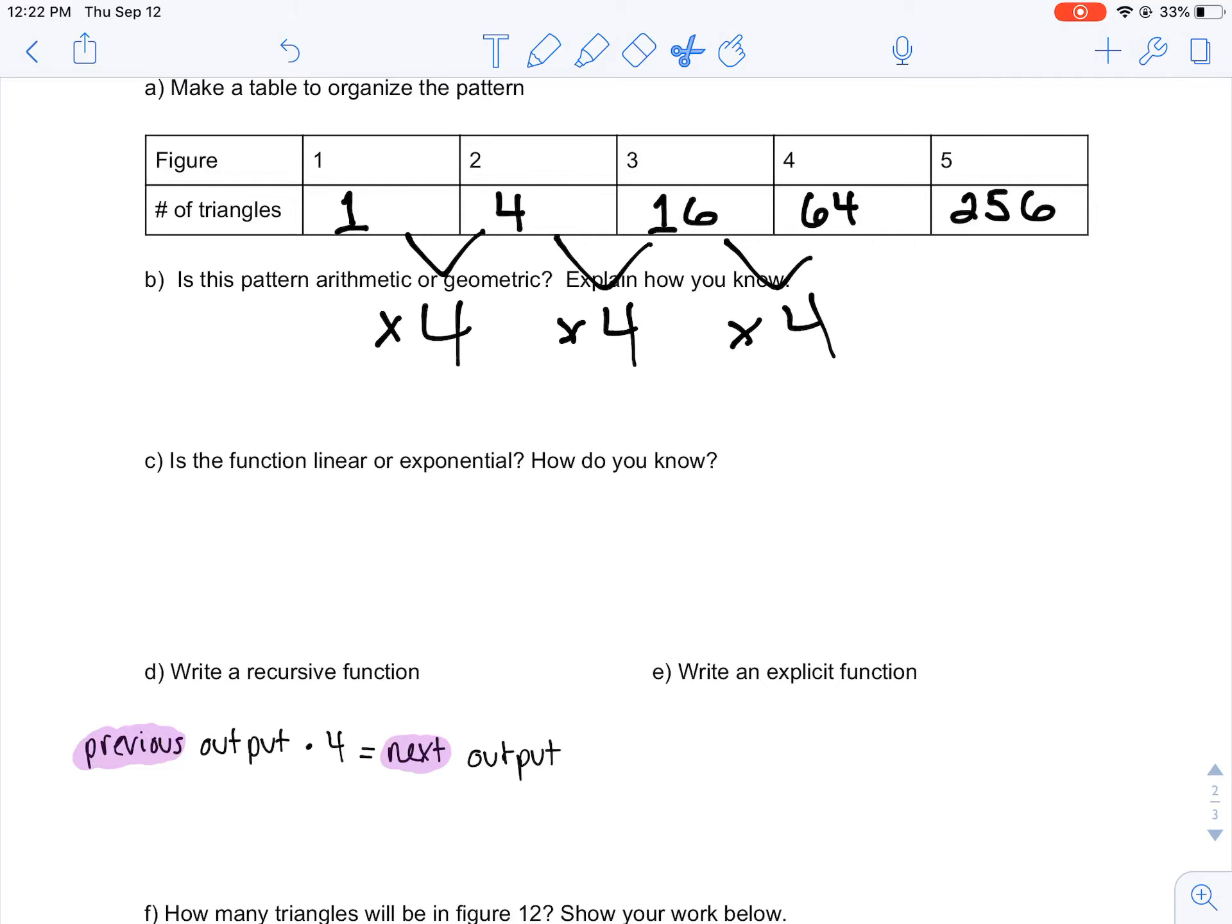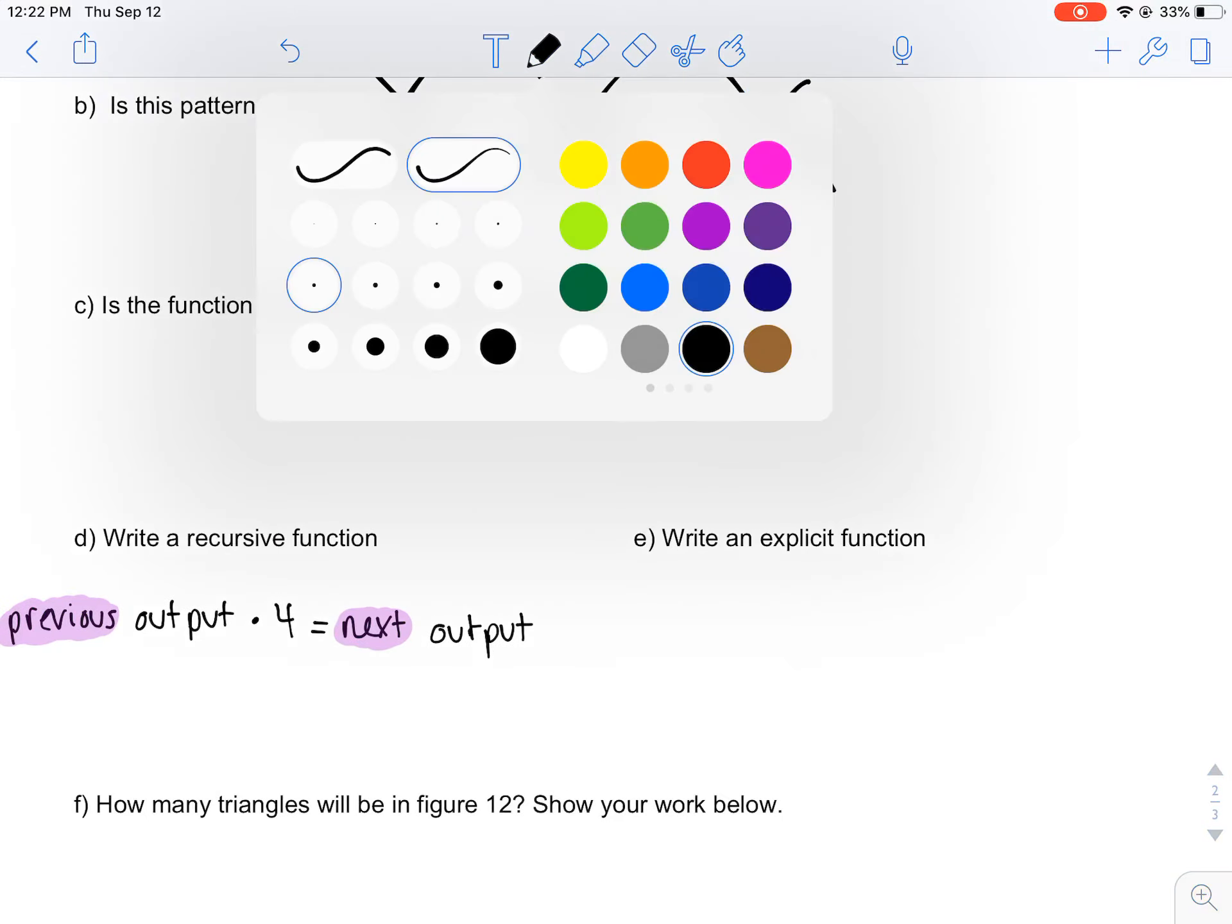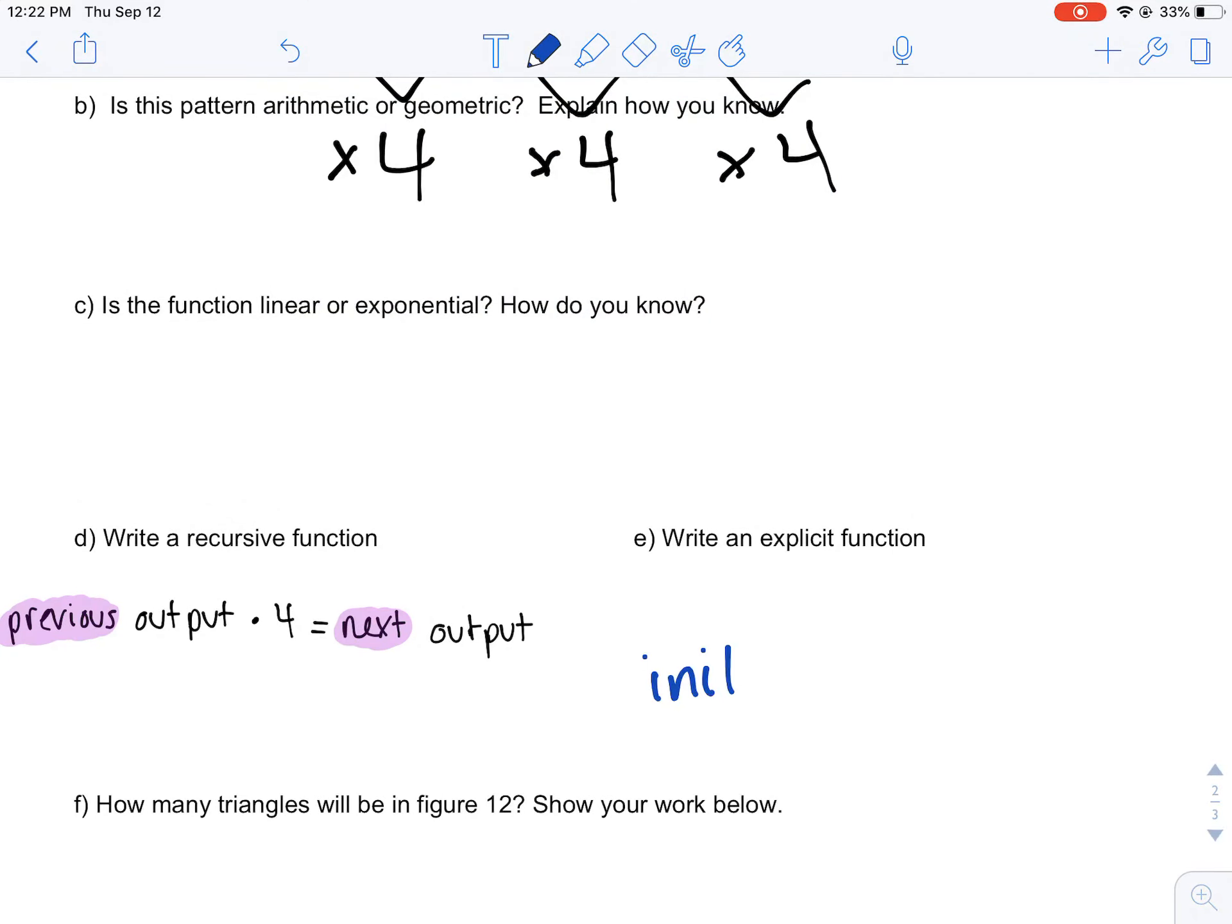The explicit is a little trickier because we know with explicit functions we want to start out with our initial value. We want to look at the change and that gets us to our output.